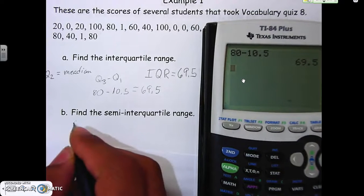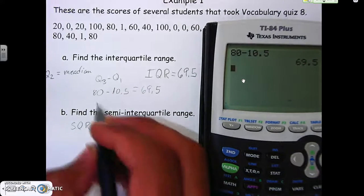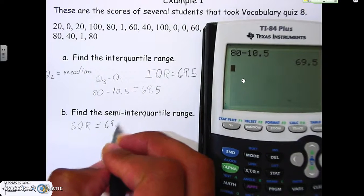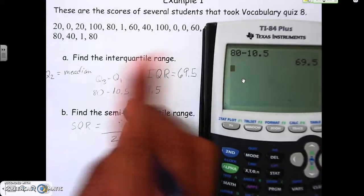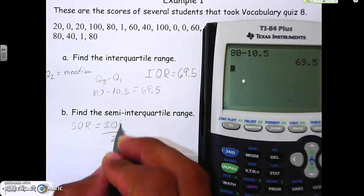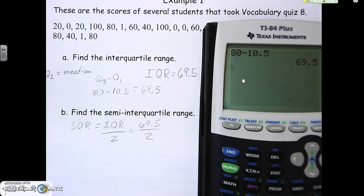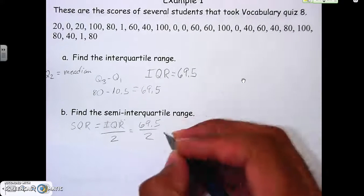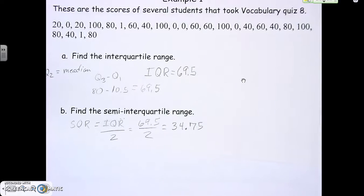Now let's go to the semi-interquartile range, or SIQR. What do we do to find that answer? We take the answer we just got, the 69.5, and divide it by 2. In other words, we take the IQR and divide it by 2. In our calculator, 69.5 divided by 2, and we get 34.75. That's our answer. SIQR is 34.75. That's it, that's all she wrote.